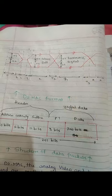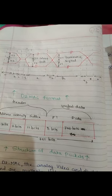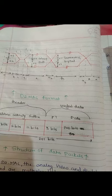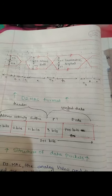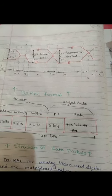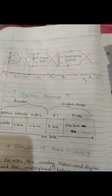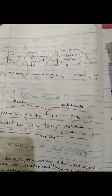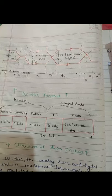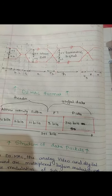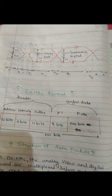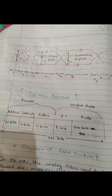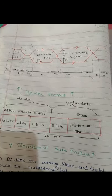Due to the large bandwidth requirement of phase shift keying, the D2 MAC system came into existence. It uses duo binary coding, which is most useful for reducing the bandwidth requirement — particularly for digital sound transmission. The newer variant of the MAC family, D2 MAC, came into existence because duo binary coding significantly reduces bandwidth.